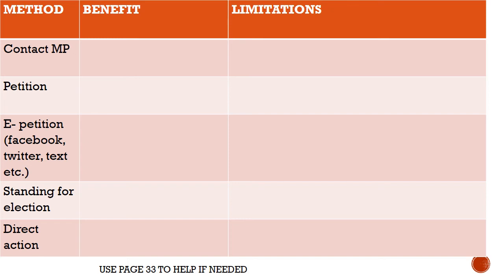Also, petitions don't have to be debated in parliament given our uncodified constitution — they might be, but they also might not. Standing for election yourself is a strong option because you could be the one changing policy, which is truly democratic. The limitation is that you may have to put your life on hold, give up your job, and there's no guarantee you'll get or stay elected. Direct action — like Fathers for Justice — benefits from mass media attention but can turn harmful if it becomes violent or illegal.